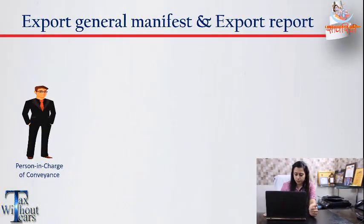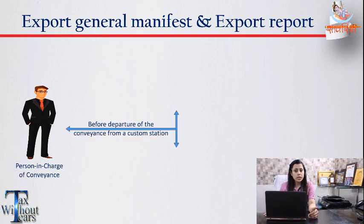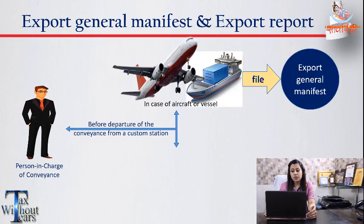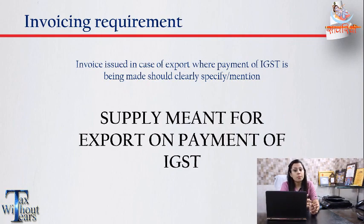What is the Export General Manifest or export report? The person in charge of the conveyance — for example, the pilot in case of aircraft or driver in case of road transport — before the departure from the customs station, files the Export General Manifest or, in case of a vehicle, the export report, containing details of goods taken from the Indian frontier to the other country. Once the EGM or export report is filed, the exporter is eligible to claim the refund. In your invoice, you must write: 'supply meant for export on payment of IGST.'